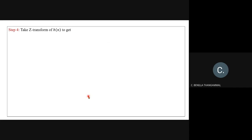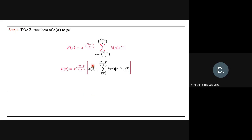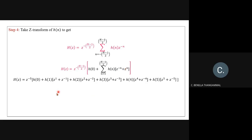Step four: get the Z-transform. H(z) = z^(−(N−1)/2) · summation from n = −(N−1)/2 to +(N−1)/2 of h(n) · z^(−n). The term z^(−(N−1)/2) with N=11 gives z^(−5). Taking h(0) out and changing limits to 1 to (N−1)/2, we get H(0) plus summation from n=1 to 5 of h(n)[z^(−n) + z^(+n)].